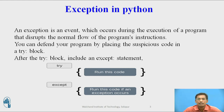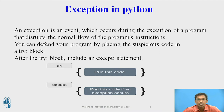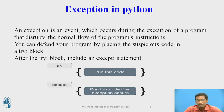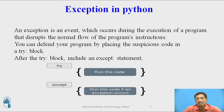You can defend your program by placing suspicious code inside a try block, and then after the try block include an except statement. In Python you have a try and except block. If you think that a particular code may cause an exception during the execution of your program, all those statements are generally included inside the try block.